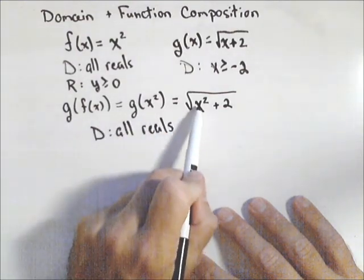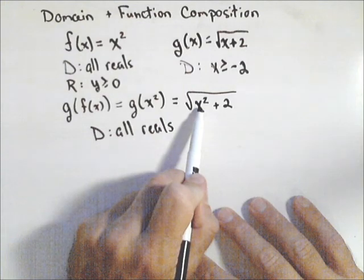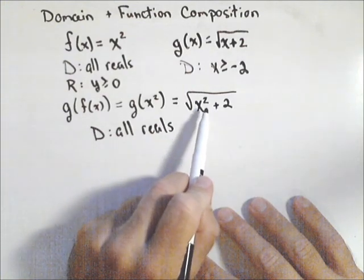We can also see it by checking the function. Since x squared will always be positive, adding two, we're still going to be able to take its square root.